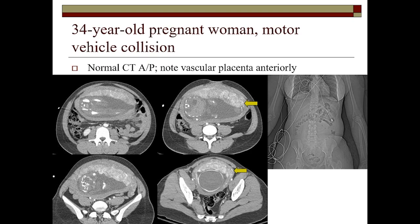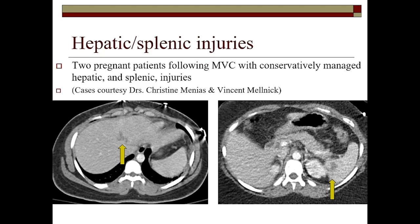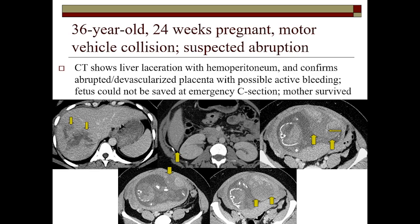Here is a case from my institution — a normal placenta in the third trimester. You can see there is some heterogeneity; it's an anterior placenta, but this was normal. There was no associated hemorrhage or fluid collection, and this patient did fine. Two cases borrowed from colleagues show lower grade injuries to the liver on our left and the spleen on our right after motor vehicle collisions in pregnant patients, and they did fine with conservative management.